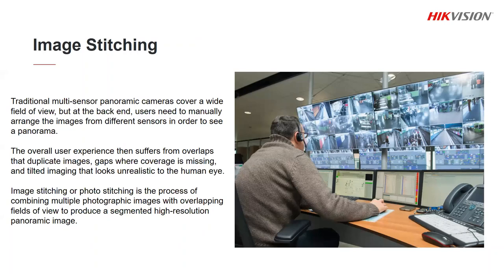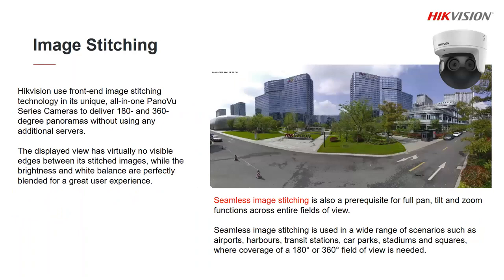To solve this we have another type of PanorView which has multiple fixed lenses all covering slightly different overlapping parts of the scene. We then use image stitching to take the views from the multiple lenses and combine them into one wide panoramic view that looks like it was taken with one incredibly wide angle lens. Because our image stitching is done in the camera you end up with a wide clear view with hardly any visible edges where the images are joined together, and you get consistent brightness and white balance throughout the whole scene.